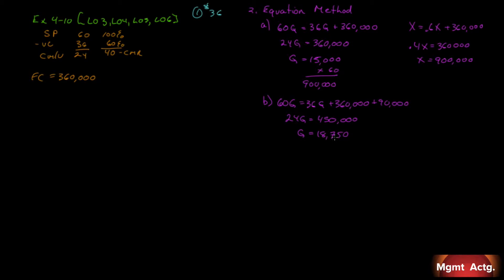Q will equal $18,750. And we can multiply that by our $60 per knapsack, and we will get $1,125,000. We could also solve it by looking at this equation over here and replicating it: X equals 0.6X plus 360K plus the other 90K, and solving for X. So we can do it in one of two ways.